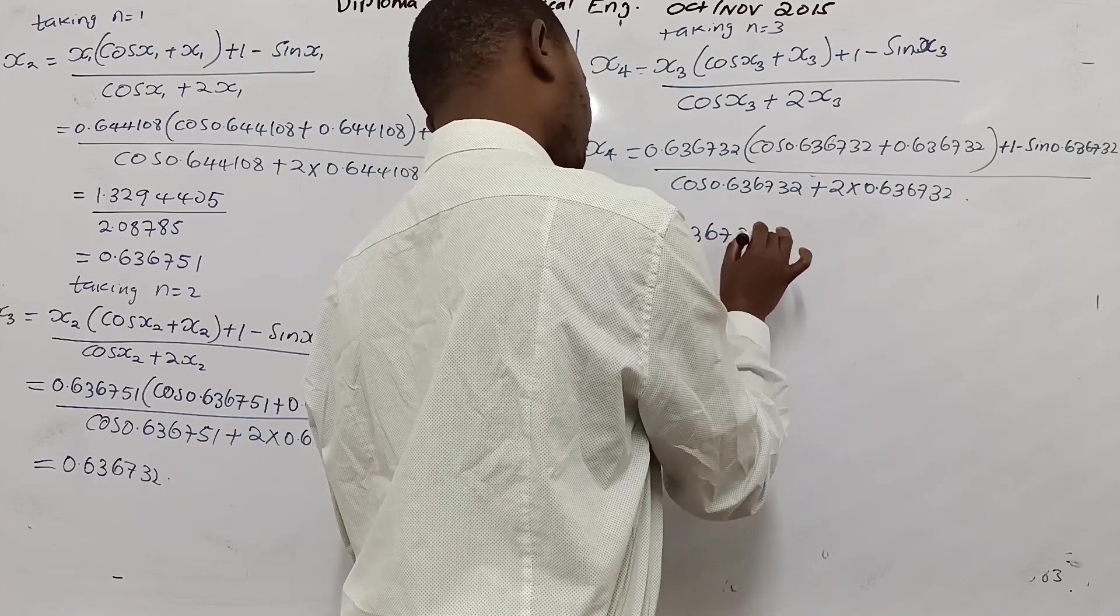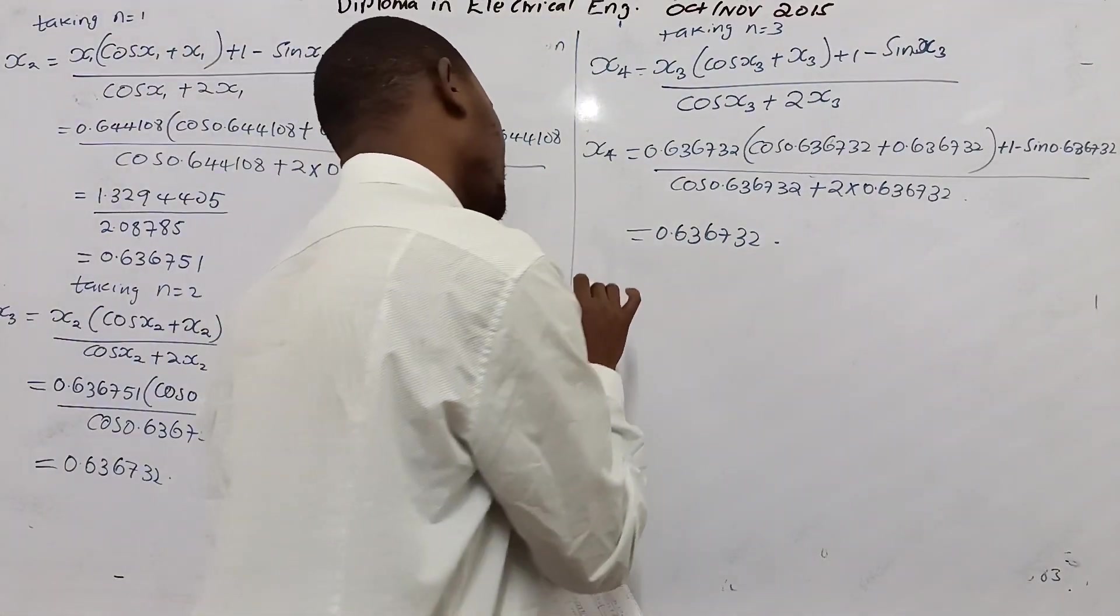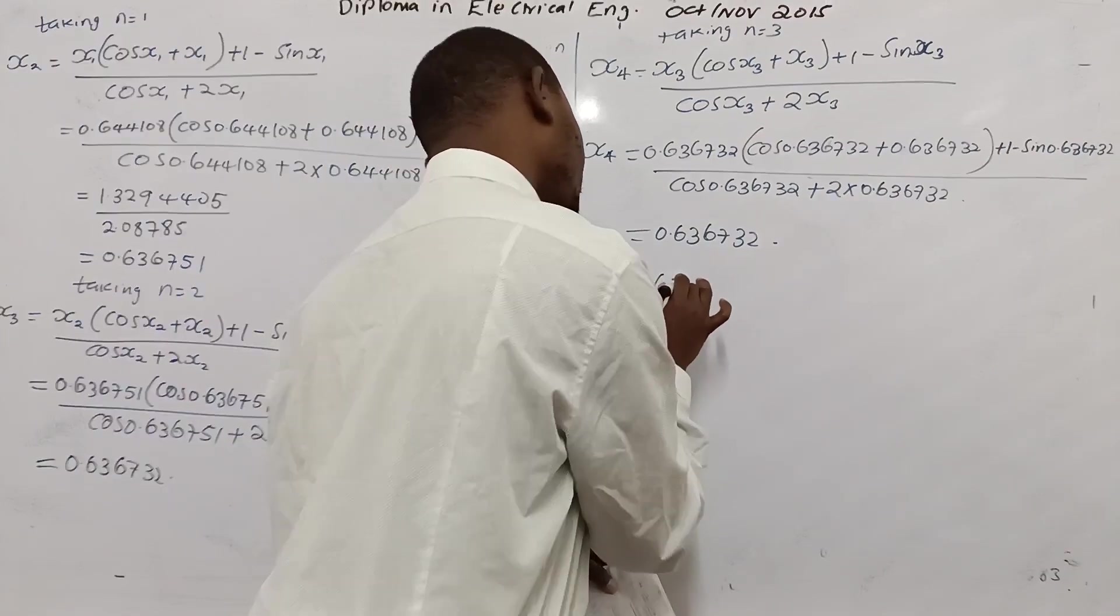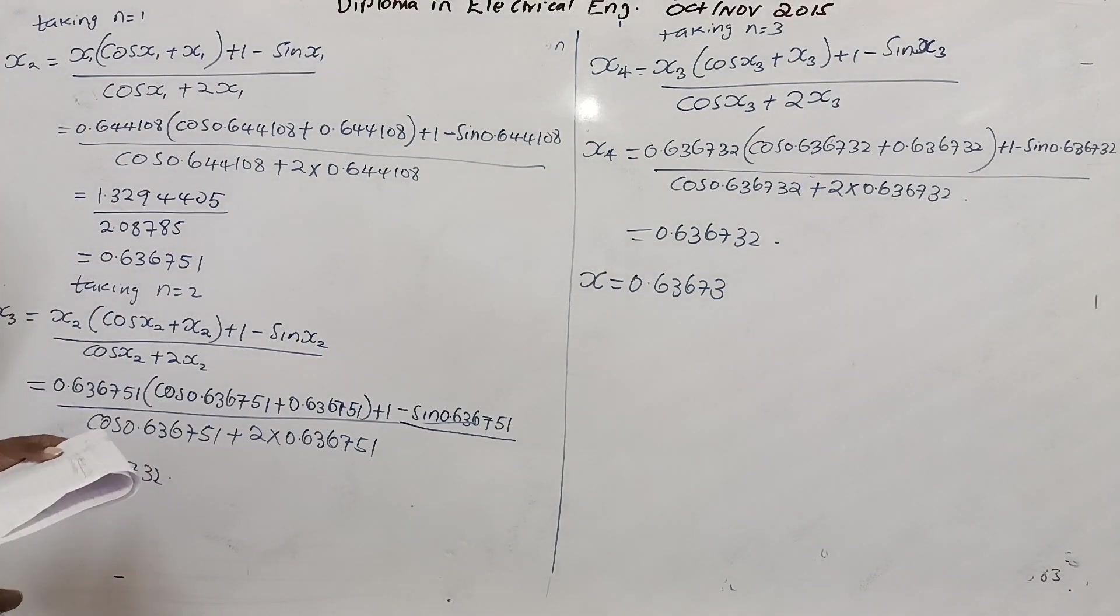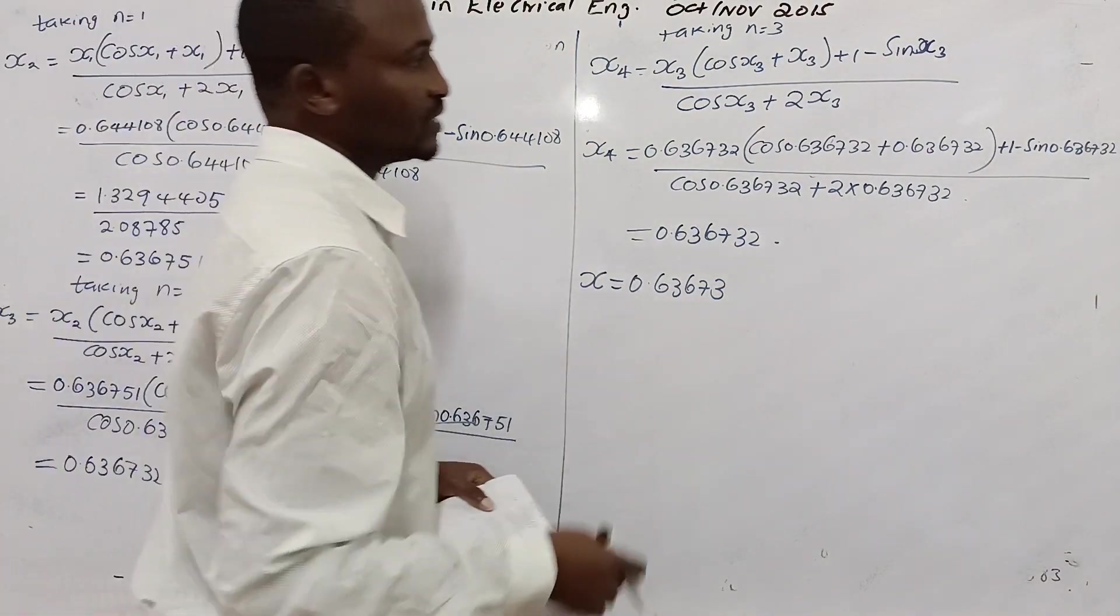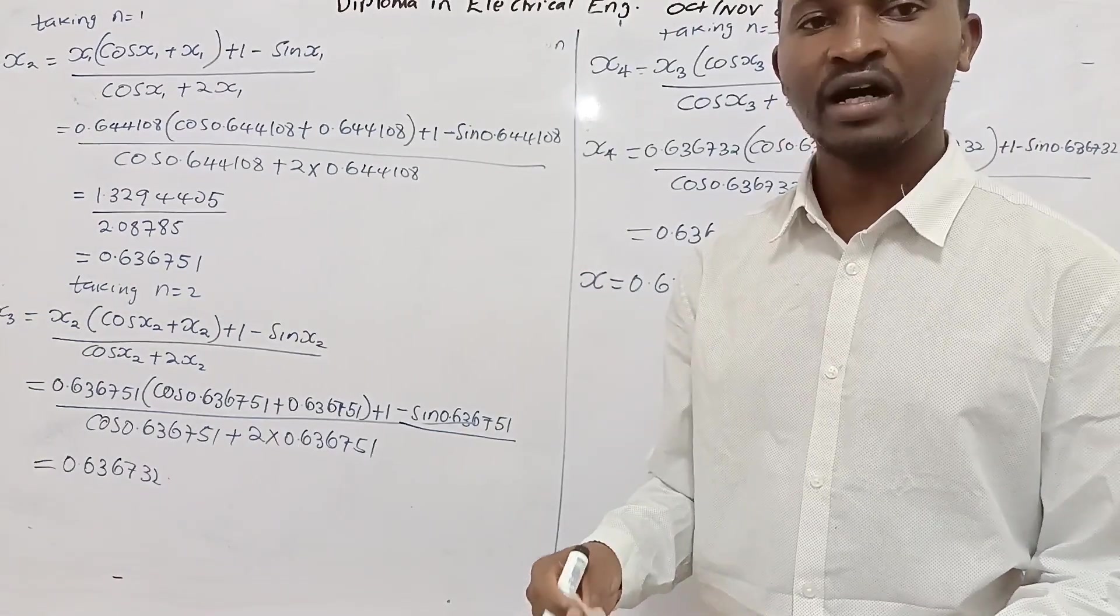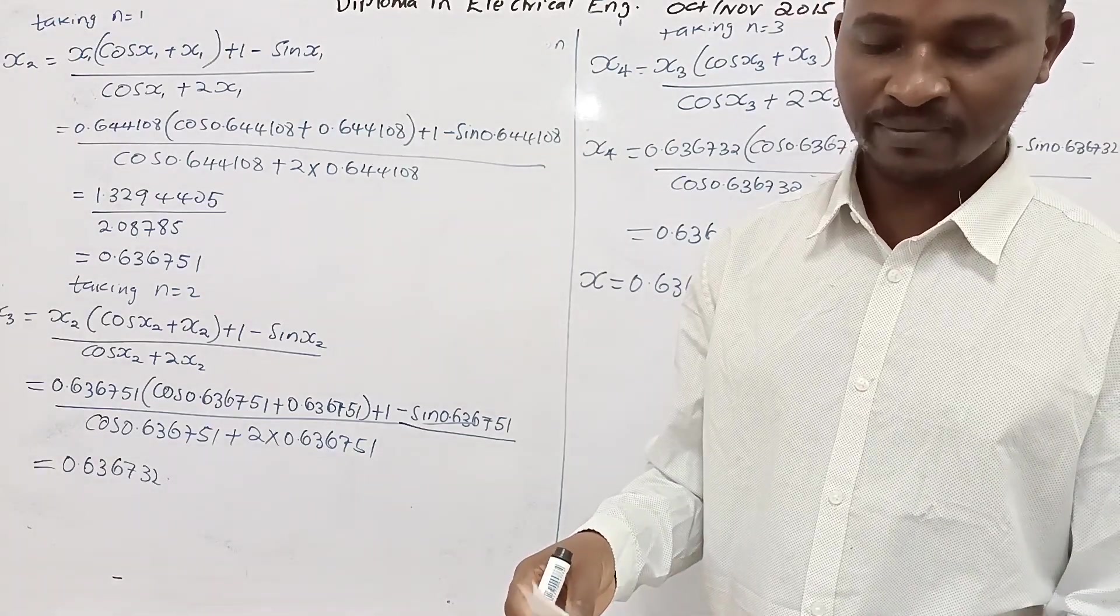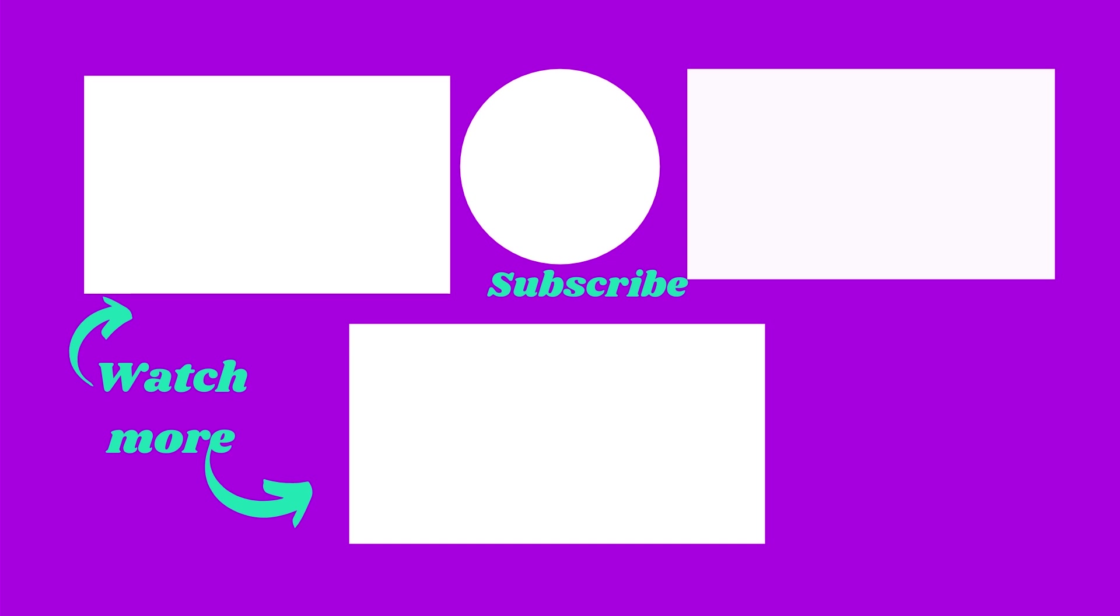We are required to give the answer correct to 5 decimal places, so we will finally say x equals 0.63673. That is it. As always, remember to leave your question or comment, you can subscribe to the channel, you can also always support the channel by watching the videos.